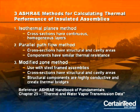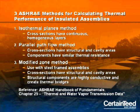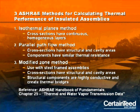There are three ASHRAE methods for calculating thermal performance of insulated assemblies. The first is the isothermal planes method, used when cross sections have continuous, homogeneous layers. The second method, the parallel path flow method, is used when cross sections have structural and cavity areas and when components have similar thermal resistance. The third method, the modified zone method, is used with steel-framed assemblies, which have cross sections with both structural and cavity areas. Structural components are highly conductive and create thermal bridges. The reference for this is Chapter 25 of the ASHRAE Handbook of Fundamentals.